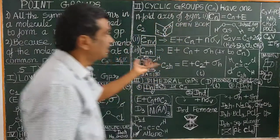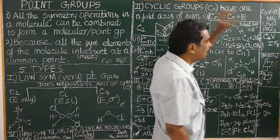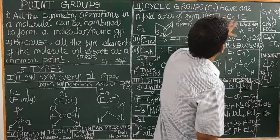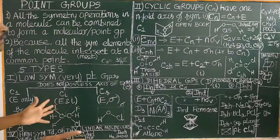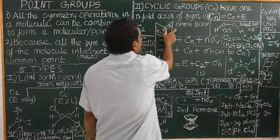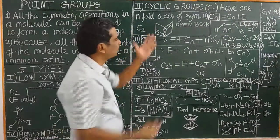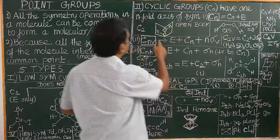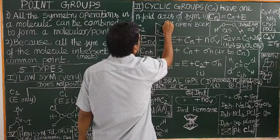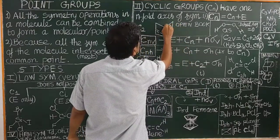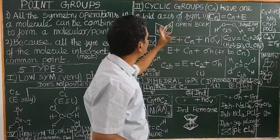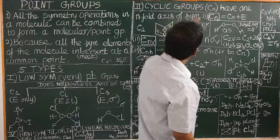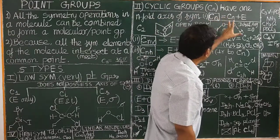Now let us see cyclic groups. Cyclic groups are represented by Cn. They have only one n-fold axis of symmetry, in addition to E. All the molecules will have E. Let us take hydrogen peroxide. Hydrogen peroxide in the open book configuration consists of only a C2 axis — one two-fold axis of symmetry.